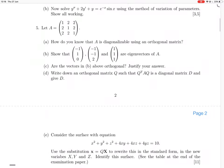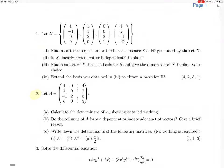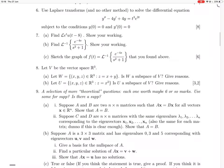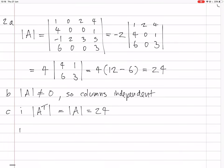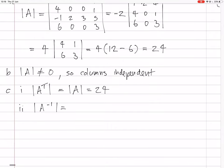Then they want the determinant of A inverse. The determinant of the inverse is always 1 over the determinant of the matrix itself, so it's 1 over 24.